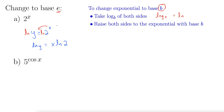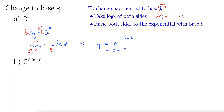Now we take both sides base e. The e and the natural log are inverses, so they undo each other, leaving us simply with y equals e to the x natural log 2. There we go — we have changed the base to base e.